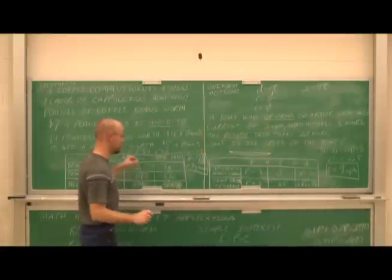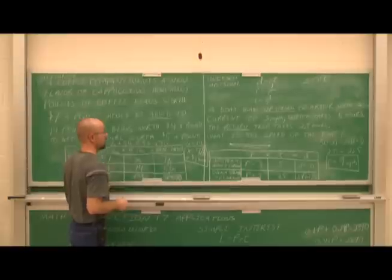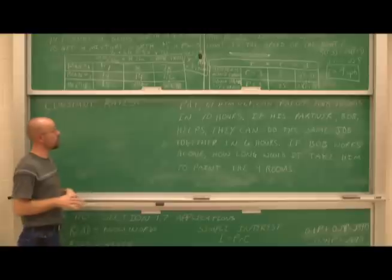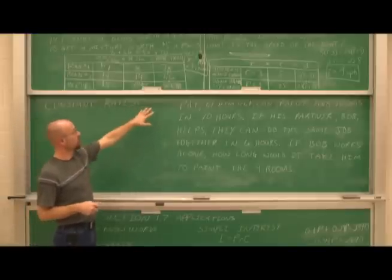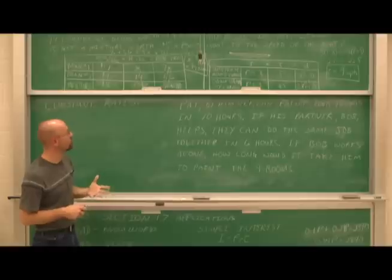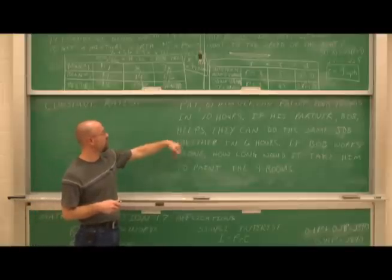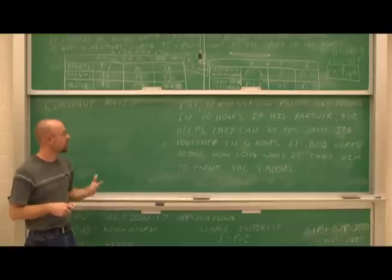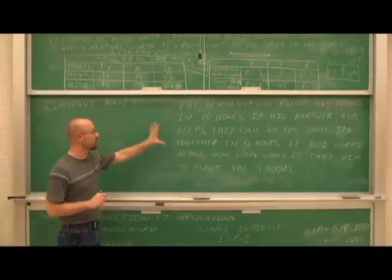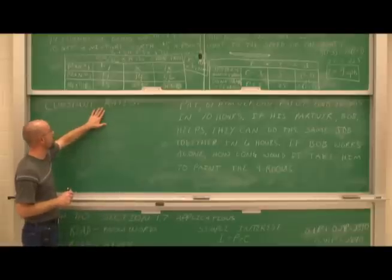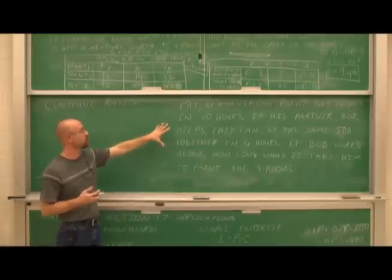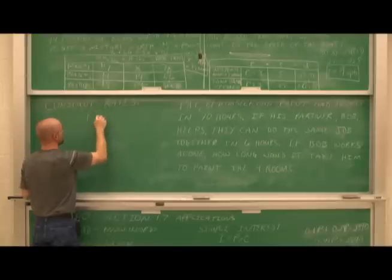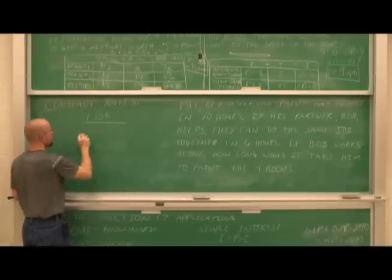Let's move on to the last example — and this one is going to be your quiz. It says: Pat, by himself, can paint 4 rooms in 10 hours. If his partner Bob helps, they can do the same job together in 6 hours. If Bob works alone, how long would it take him to paint the 4 rooms? Before turning you loose, I'll give some background on how to deal with constant rate equations.